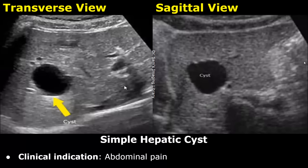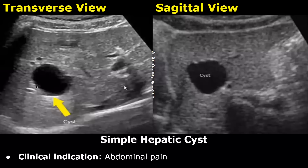Hello everyone, this is Dr. Sam and this video is about liver ultrasound reporting. We will see how to write ultrasound reports of liver pathologies. These will include clinical indication, findings, and impression. The first case is of a simple hepatic cyst. A hepatic cyst may cause abdominal pain and in some cases it can be asymptomatic and found incidentally. The clinical indication in this example is abdominal pain.